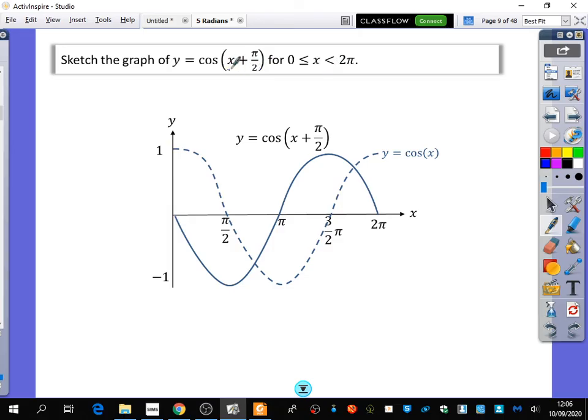What does this kind of transformation mean? What would this transformation be if it's got x + π/2? Translation to the left of π/2 radians or 90 degrees. So you can see here, here is the cos graph.